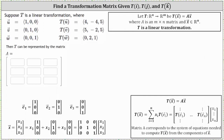Suppose T is a linear transformation where we are given the vectors u, v, and w, and also the corresponding transformations. Notice how the vectors u, v, and w are not just any vectors in R3 — these are the standard basis vectors, often referred to as the vectors e sub one through e sub three, shown here below.